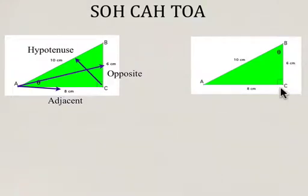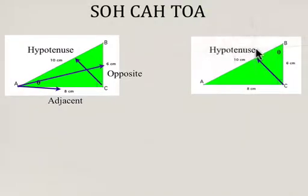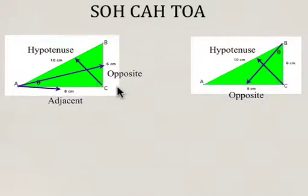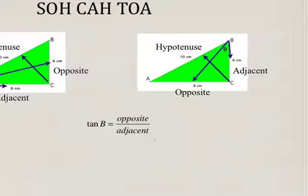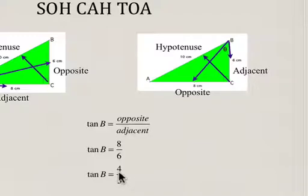Now looking at the same triangle, we're considering the primary trig ratios for angle B. The hypotenuse is still the 10 centimeter side because the hypotenuse is always the side opposite the right angle. The side opposite angle B is the 8 centimeter side. For angle B, AC is the opposite side and BC is the adjacent side. So tan of angle B, opposite over adjacent, is 8 over 6, which in simplest form is 4 over 3.